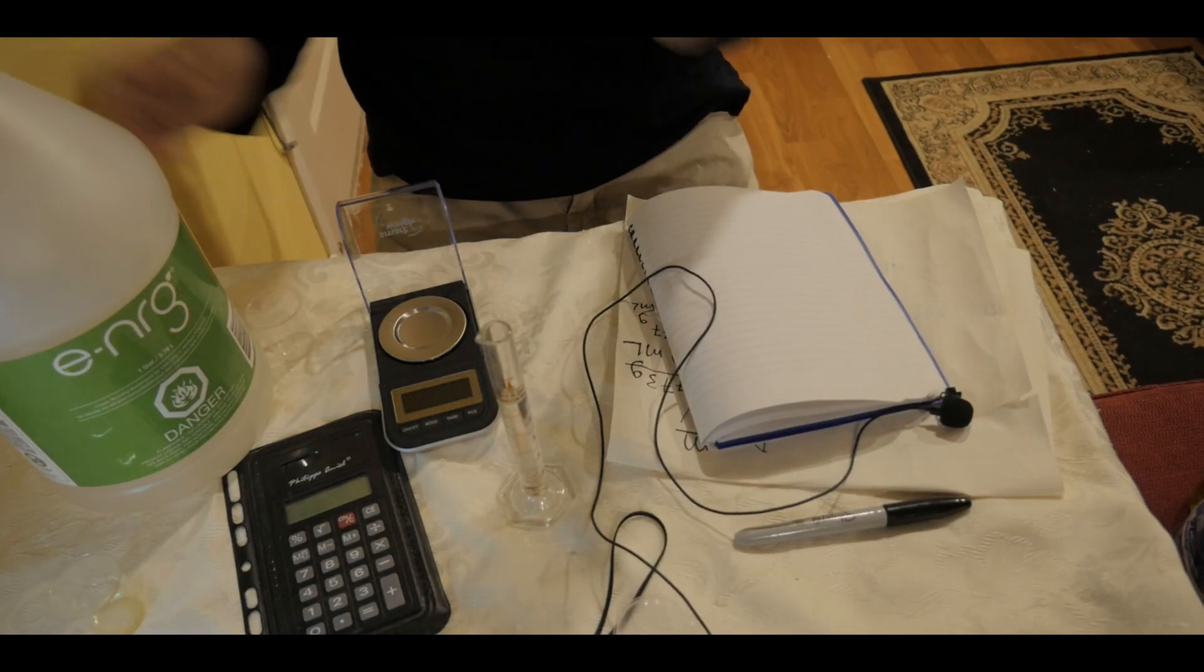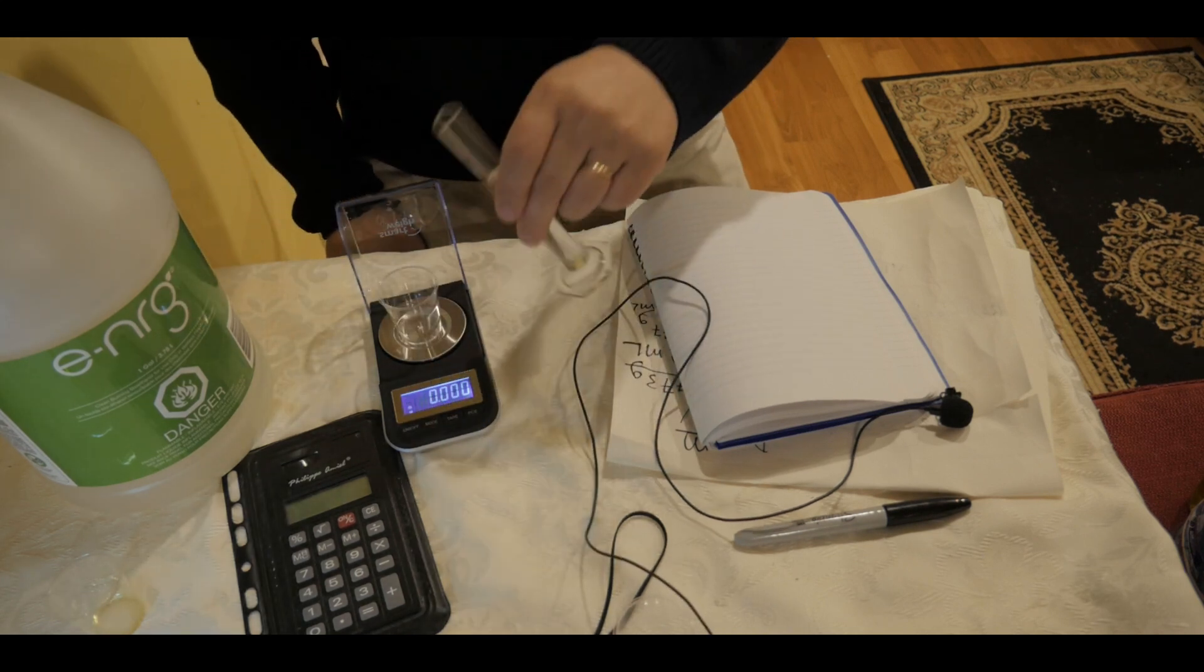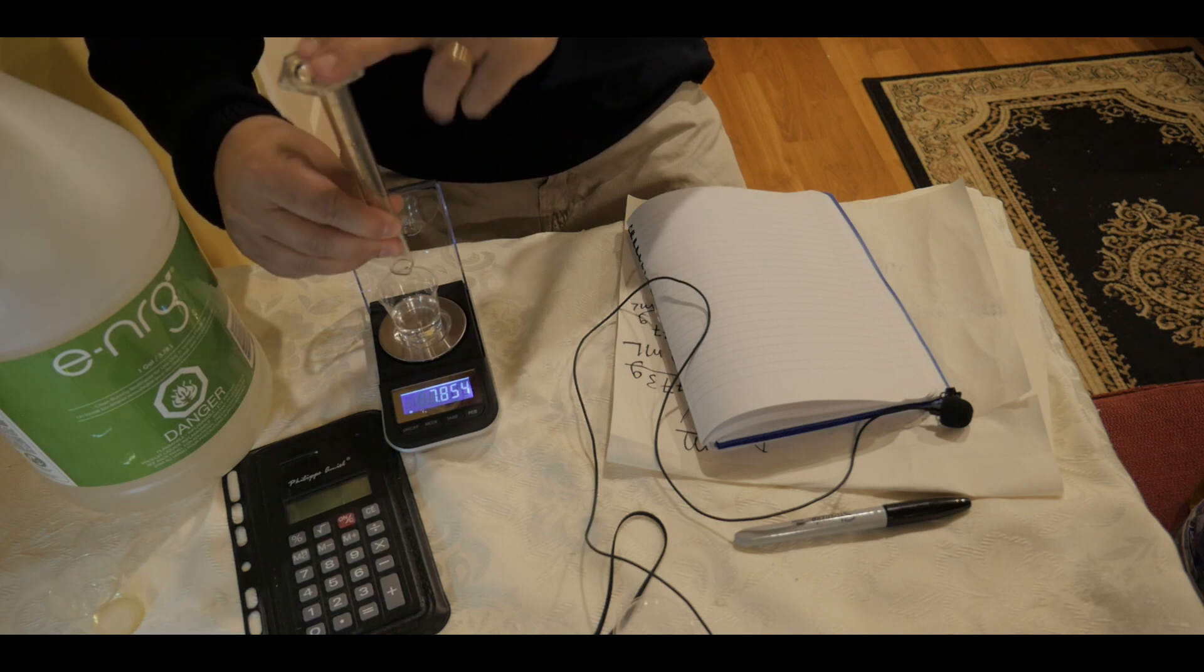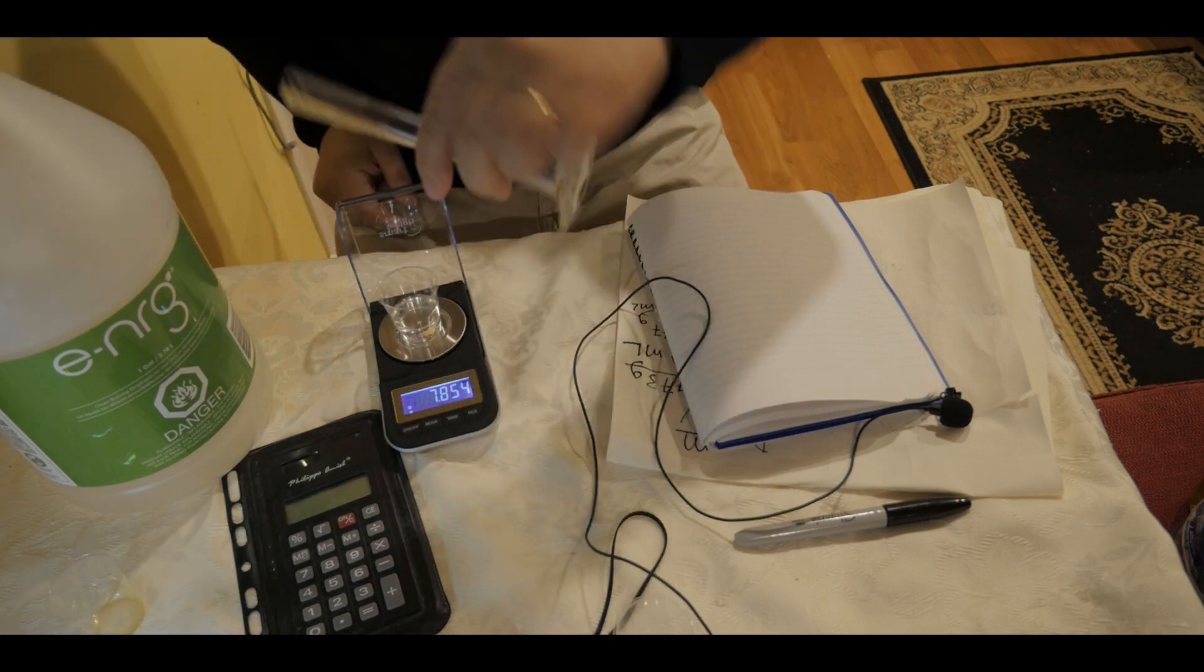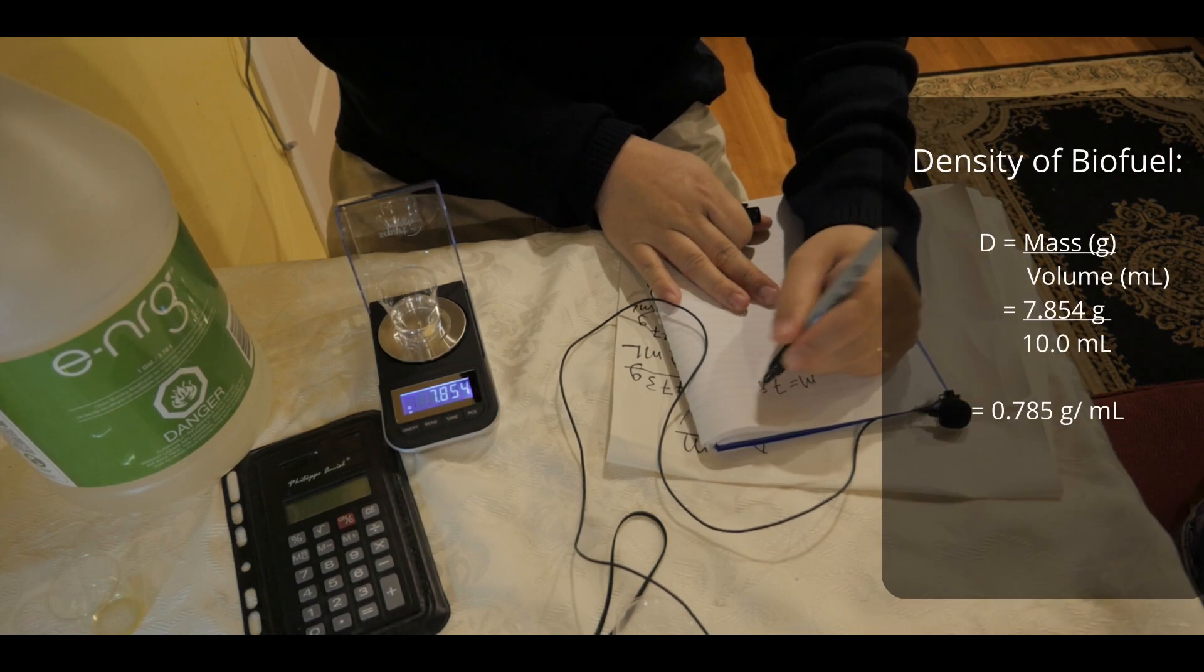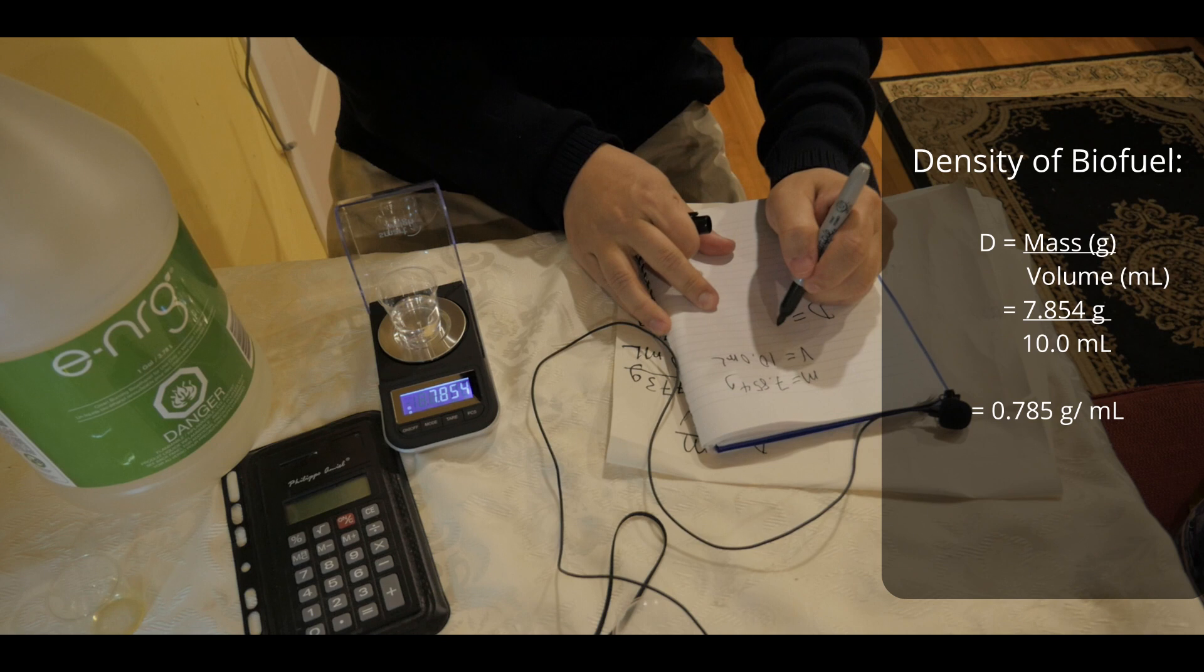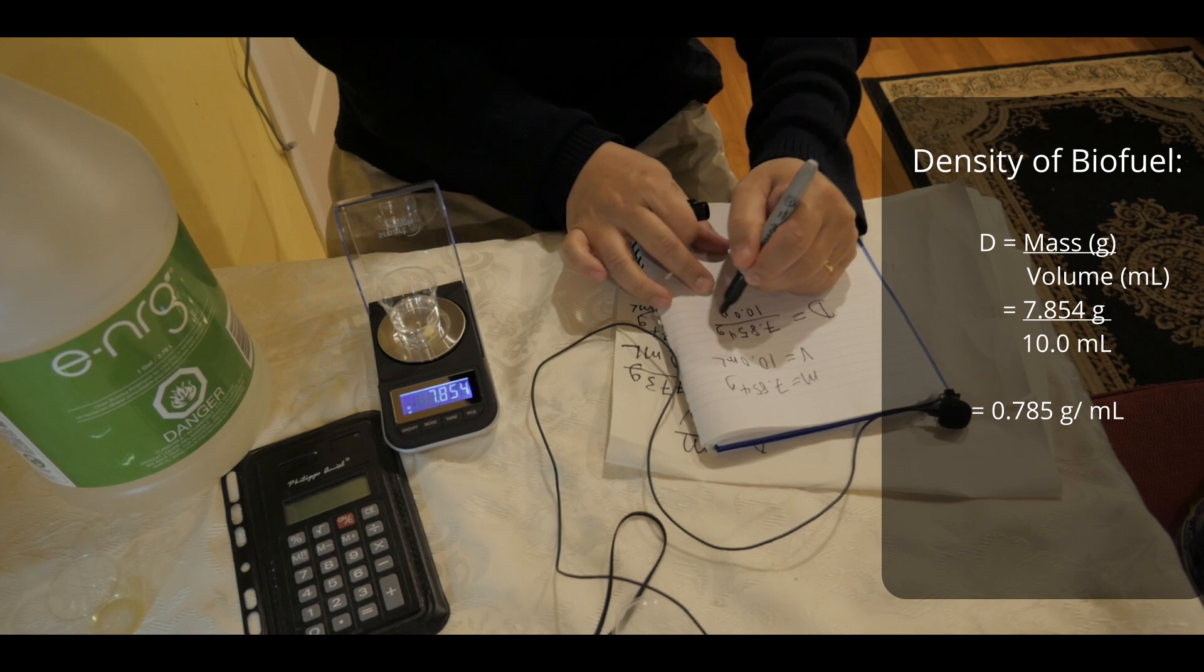Okay, so lastly, we have biofuel. We're going to measure 10 milliliters of biofuel and let's measure the weight. So now let's see 10 milliliters of biofuel, which is 92% ethanol and 8% isopropyl. See how that is going to be. So I got everything here. The mass is 7.854 grams and the volume is 10.0 milliliters. So that means the density must be,